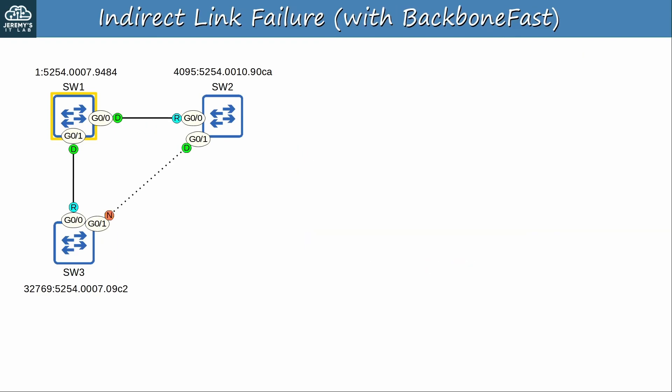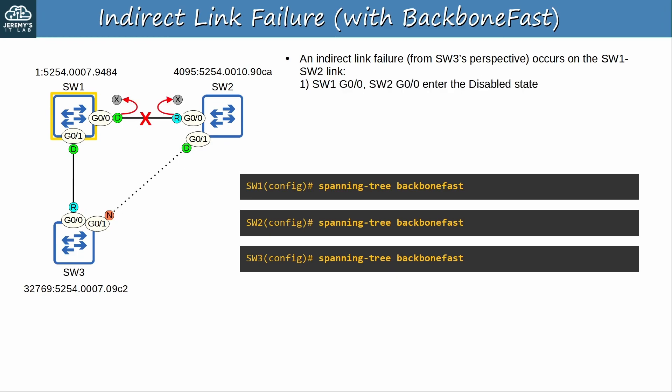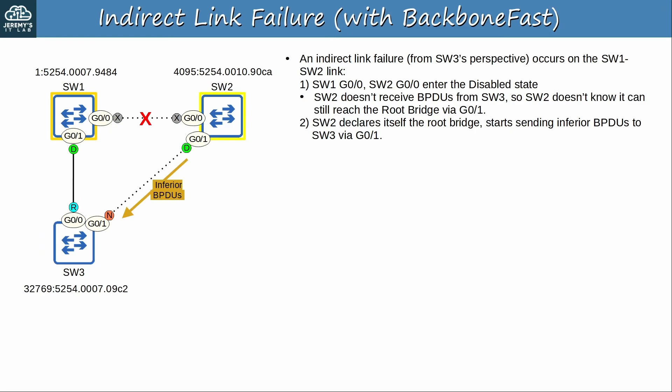Starting from the same original LAN, let's see how BackboneFast improves reconvergence time. I enabled BackboneFast on all three switches — make sure to enable it on all switches if you're using it. The same link failure occurs on the SW1–SW2 link. SW1 and SW2 G0/0 enter the disabled state, and because SW2 doesn't receive BPDUs from SW3, SW2 doesn't know it can still reach the root bridge via G0/1. SW2 declares itself the root bridge and starts sending inferior BPDUs to SW3 via G0/1. So far, everything is the same as without BackboneFast — but here is where things change.